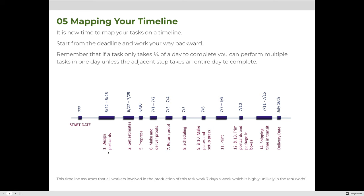Designing the postcards takes five days — June 22nd, 23rd, 24th, 25th, and 26th — which means the client will have to give us the job on June 21st, or at the very latest the morning of June 22nd, for us to be able to get this job done and delivered to Des Moines, Iowa.